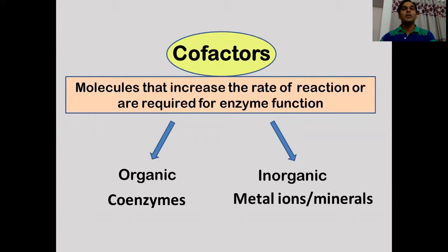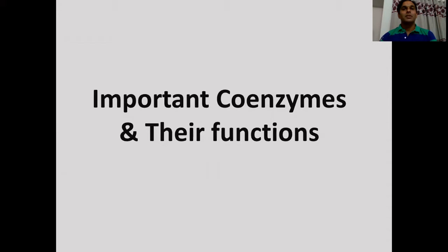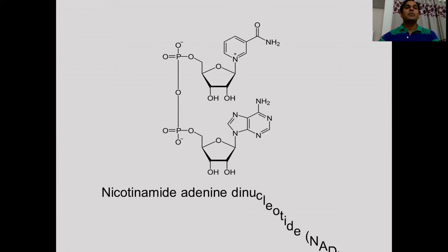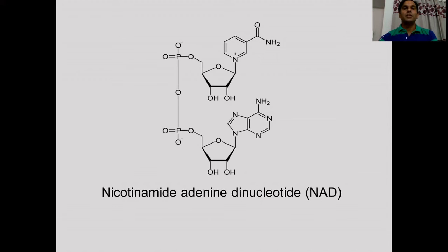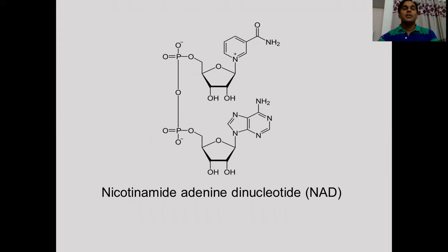Coenzymes and cofactors play an integral role in cellular metabolism reactions, playing both structural and functional roles in catalysis. Nicotinamide adenine dinucleotide, or NAD, is a cofactor found in all living cells. It is called a dinucleotide because it consists of two nucleotides joined through their phosphate groups — one containing an adenine nucleobase and the other nicotinamide. NAD acts as a coenzyme in redox reactions, as a donor of ADP-ribose in ADP-ribosylation reactions, and as a precursor of the second messenger cyclic ADP-ribose.